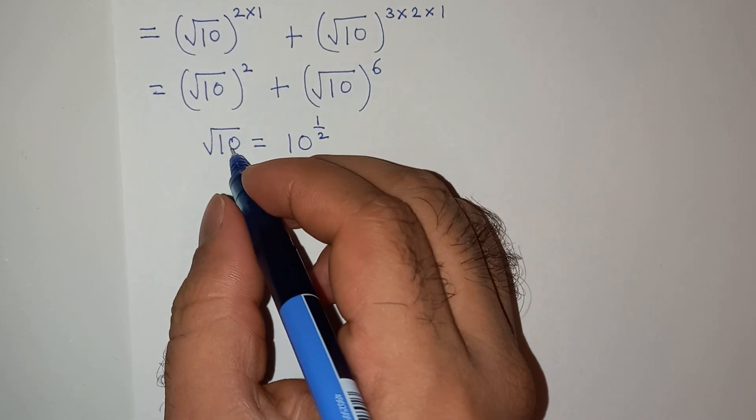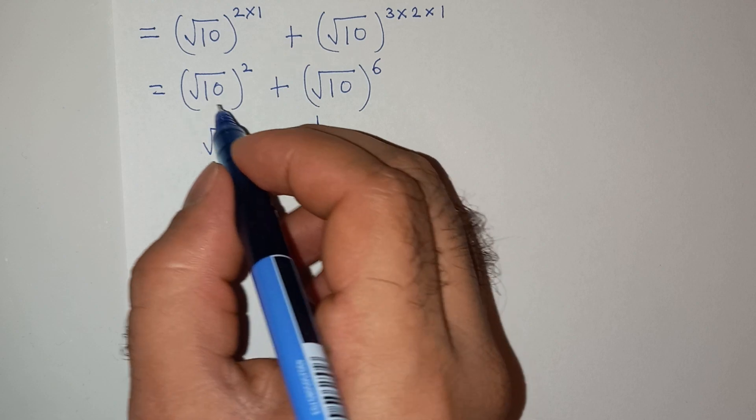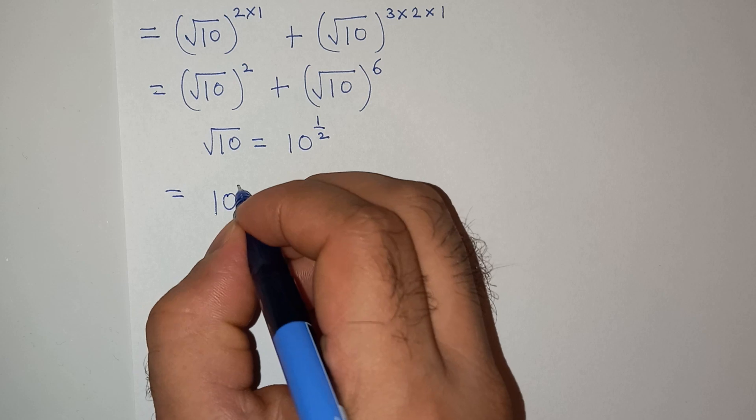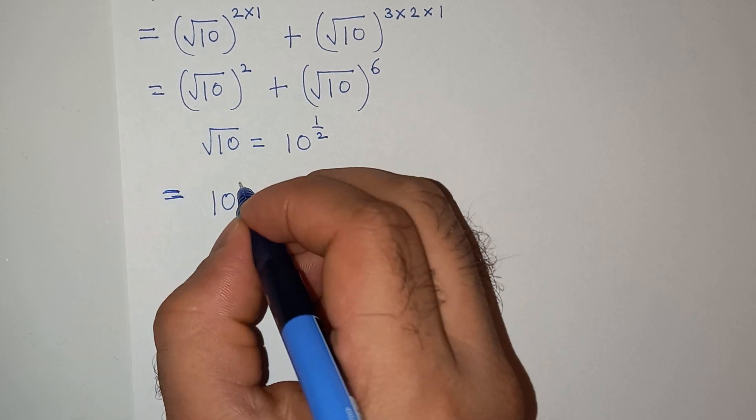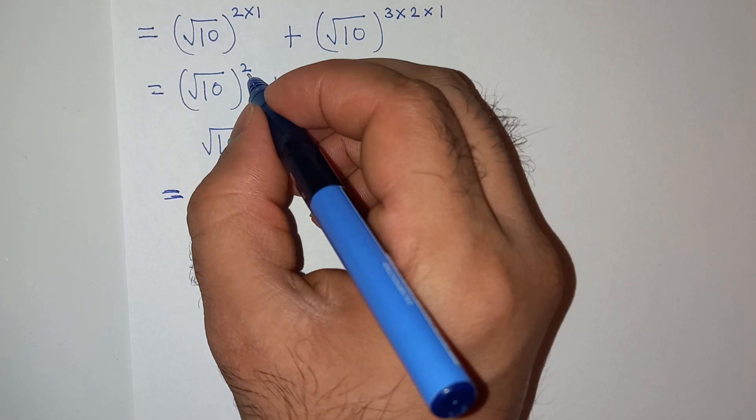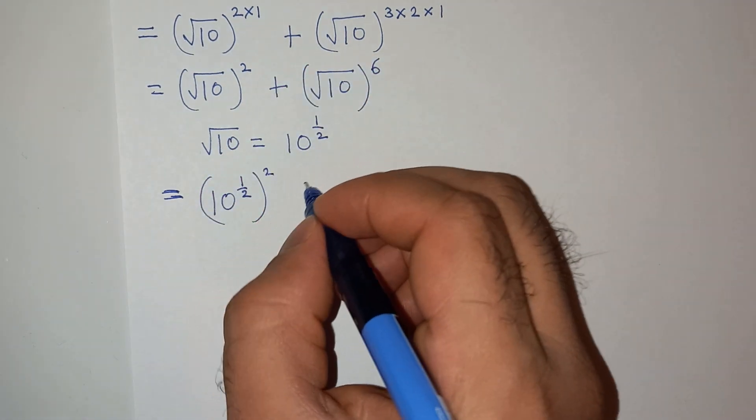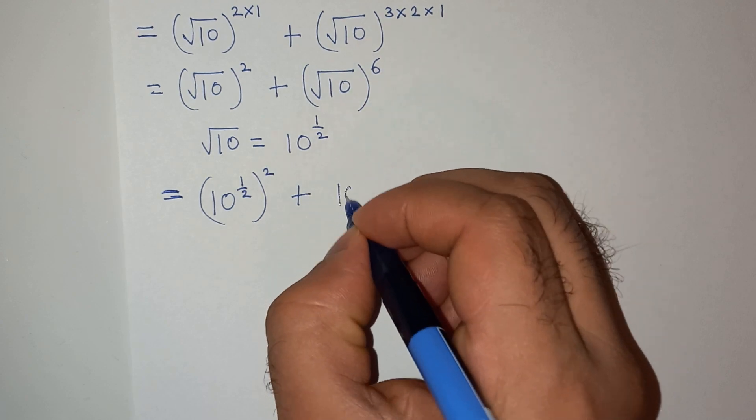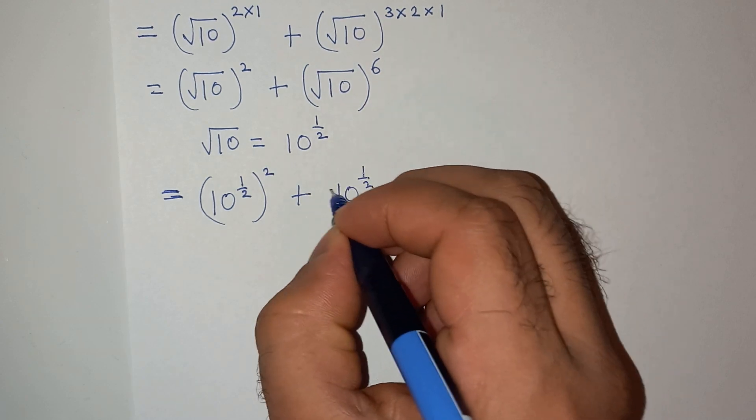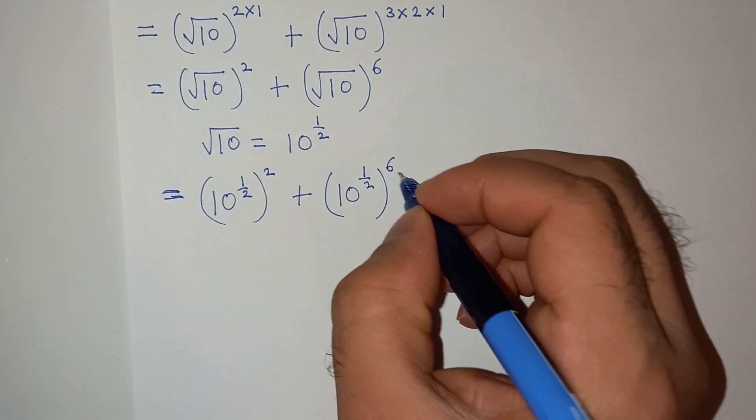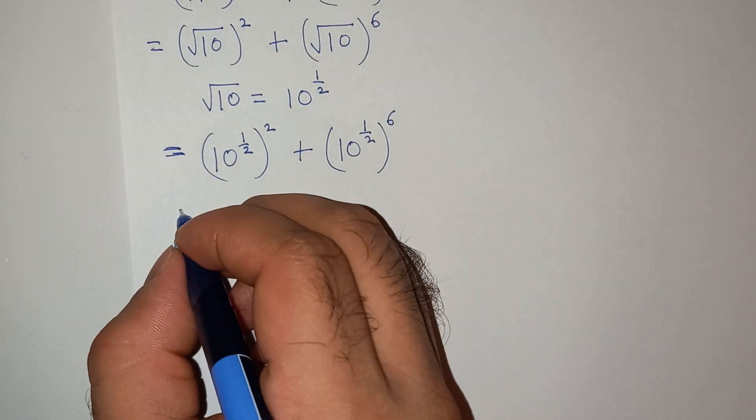So let's replace square root of 10 in the above equation. So this will be 10 to the power 1 by 2, raised to the power 2, plus 10 to the power 1 by 2, raised to the power 6.